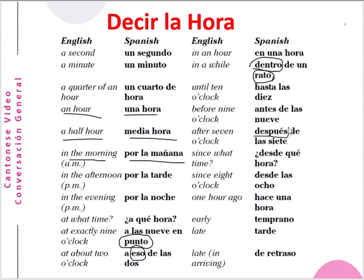After seven o'clock — después de las siete, de means 'of'. Sin — without. ¿Qué hora? — what time? Las ocho — eight o'clock. One hour ago: hace una hora.